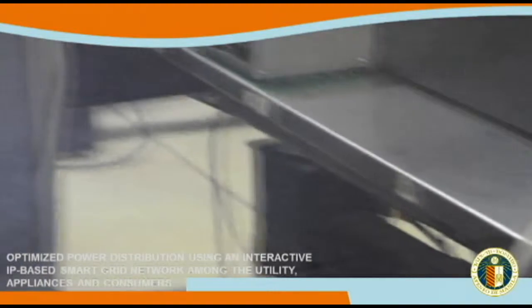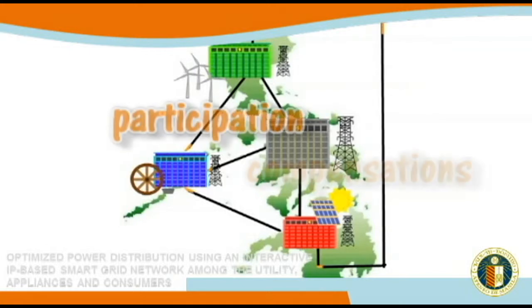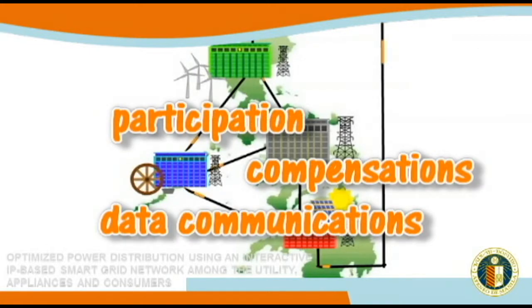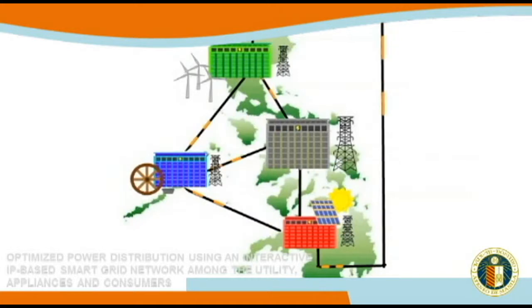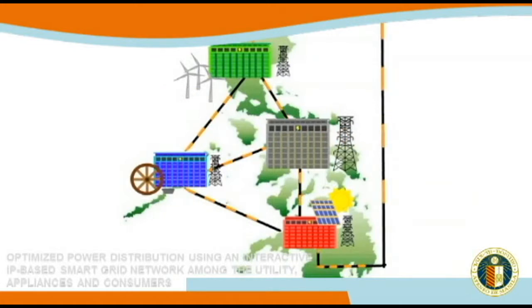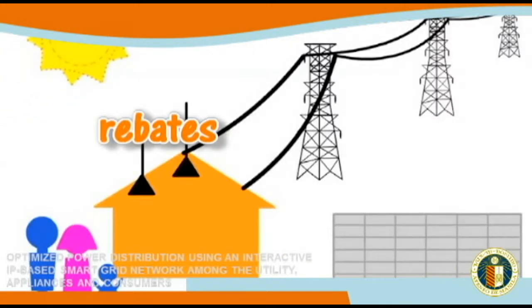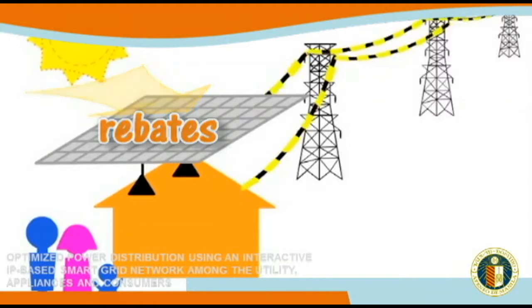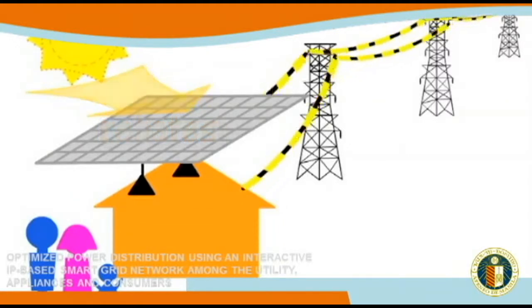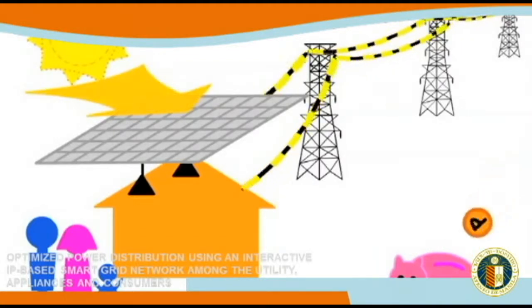Consumers who can also supply electricity via their own energy harvester infrastructure can participate and be compensated through real-time data communications as to how much power they are generating, consuming, and storing. Through monitoring, the utility shall be able to offer rebates for consumers supplying energy back to the system, thus making the smart grid flexible — making energy available to consumers when they need it and where they need it. This also calls for alternative paths for distribution should there arise any problems on power lines.